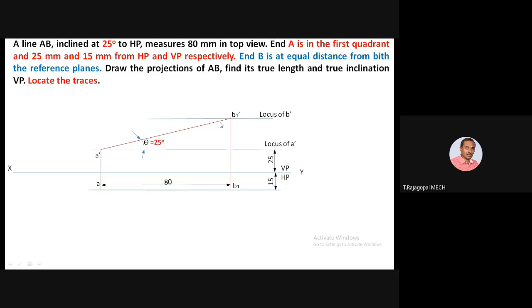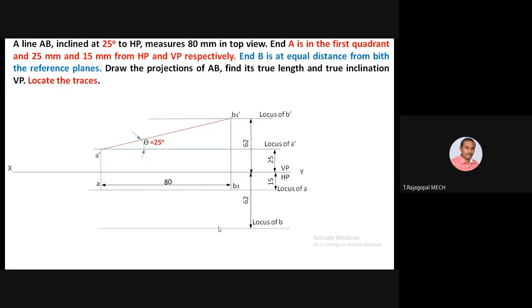The front view true length is completed. The locus of B-dash is fixed in the front view. Now apply the condition: end B is at equal distance from both reference planes. Measure the distance from XY to the locus of B-dash using a scale — this distance is 62 mm. Use this same length of 62 mm to fix the locus of B in the top view.